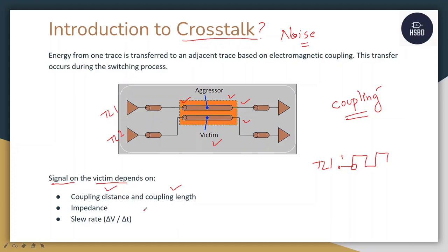Coupling distance is basically the distance between the two transmission lines — the aggressor and victim. The more the distance, the less will be the crosstalk.